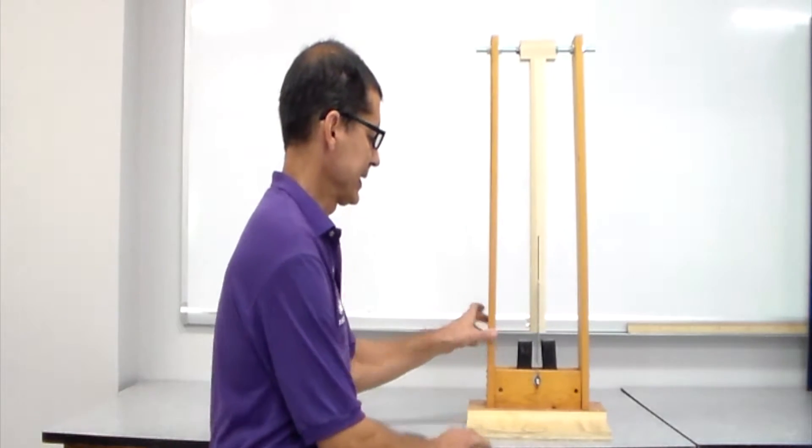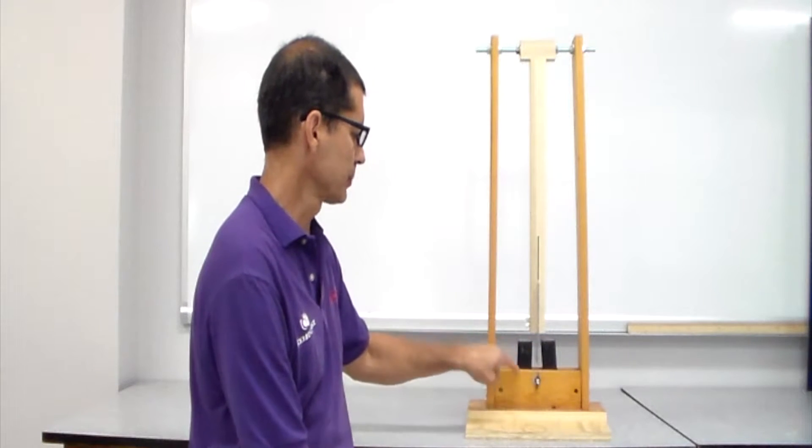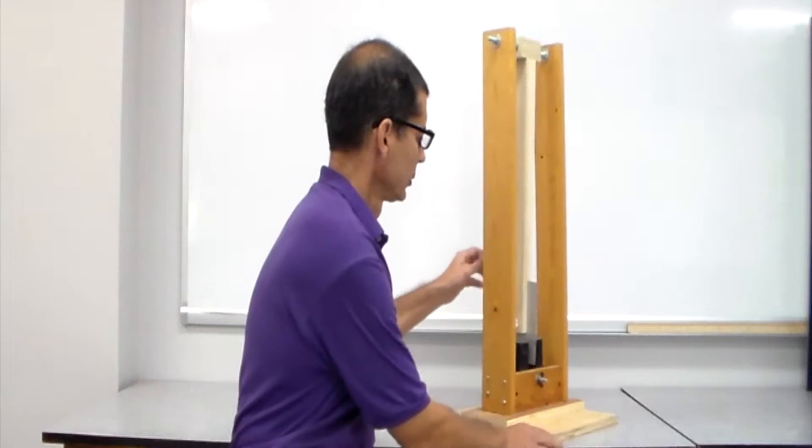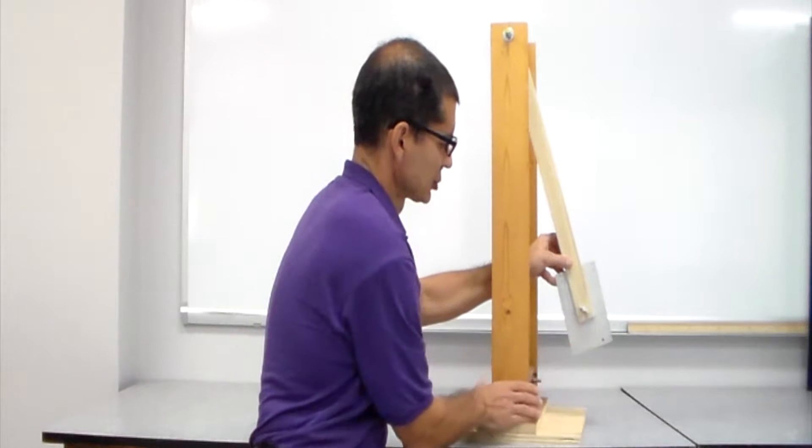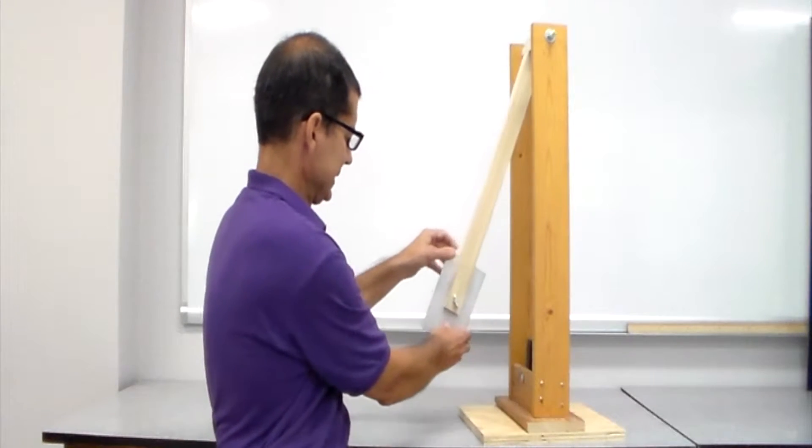Here's another Lenz's Law demo. What we have here is a horseshoe magnet, we have a pendulum, and attached to the bottom of the pendulum is an aluminum plate.